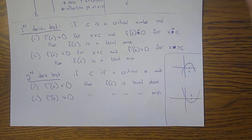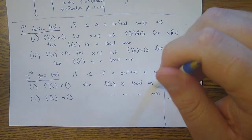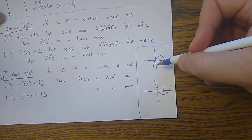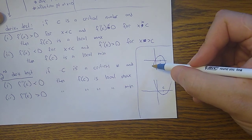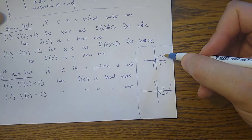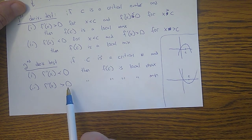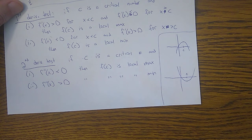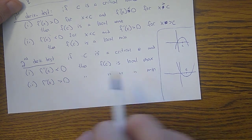For the second derivative test, you have a critical number and you look at the second derivative. If the second derivative is negative you have a local max. A local max is concave down — the derivative is positive before c, zero at c, then negative after, so the first derivative is decreasing, meaning the second derivative is negative. For local mins, if the second derivative is positive then it's a local min. People might think negative should mean min and positive should mean max, but it's the other way around.